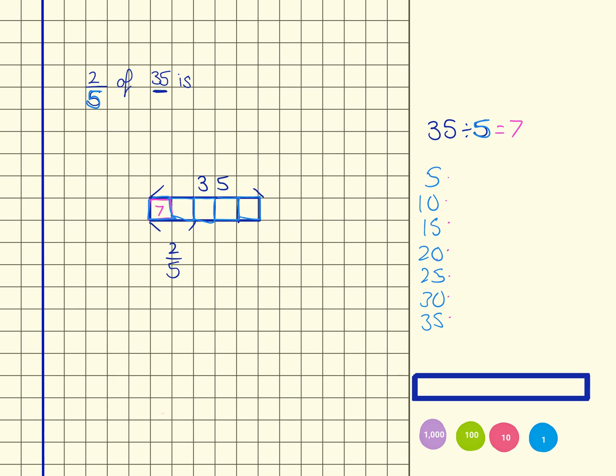That tells me that each one of these is worth 7. So when I take 35 and divide it by 5, I end up with 7.